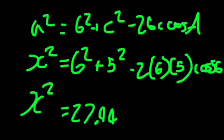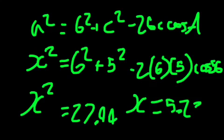That comes out to 27.44. Now we need to take the square root of this because that's x squared. So x is approximately equal to 5.26. The cosine rule is really simple. So let's get ourselves another question.